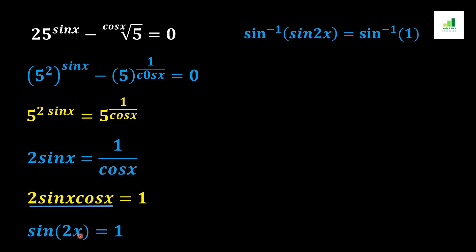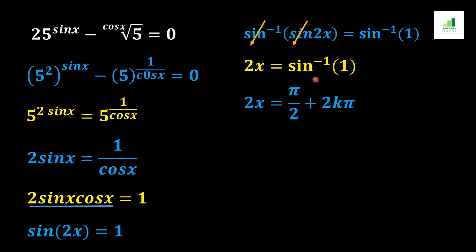In the next step, we apply sine inverse to both sides of the equation. Sine inverse of sine 2x equals sine inverse of 1. The sine inverse and sine cancel out, and we get 2x equals sine inverse of 1.